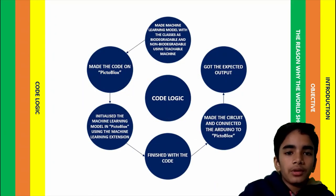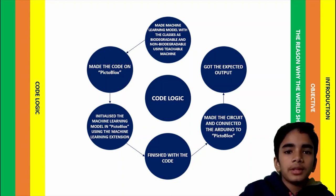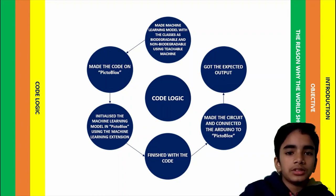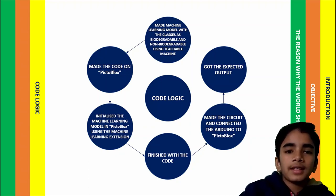The code logic is as follows. I made the machine learning model with the classes set as biodegradable and non-biodegradable using Teachable Machine. I made the code on Pictoblox and initialized the machine learning model in Pictoblox using the machine learning extension. Then I completed the circuit, connected the Arduino to Pictoblox, and got the expected output.